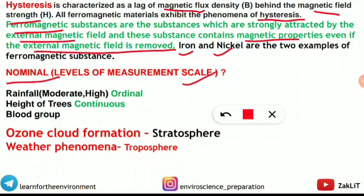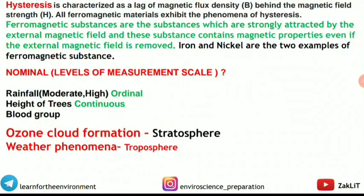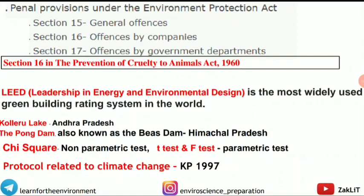A question asked to identify the nominal level of measurement from given options: rainfall (moderate/high) — ordinal; height of trees — continuous/ratio; blood group — nominal. Blood group is the correct answer for nominal scale. Another question matched atmospheric layers with phenomena: ozone layer and cloud formation in the stratosphere; weather phenomena in the troposphere.